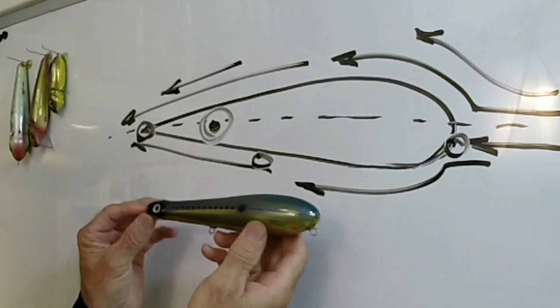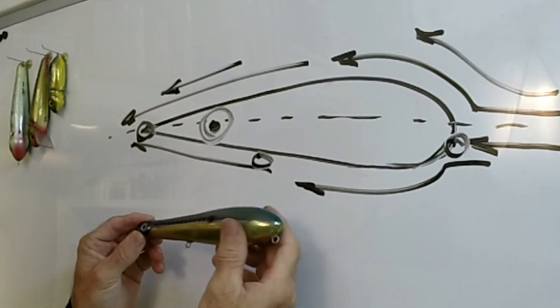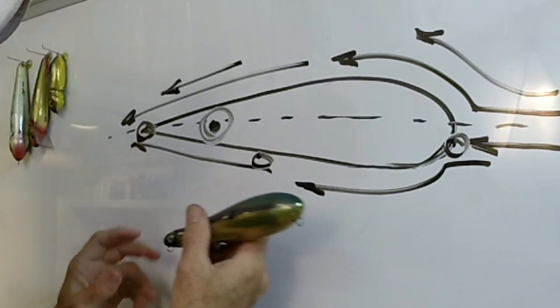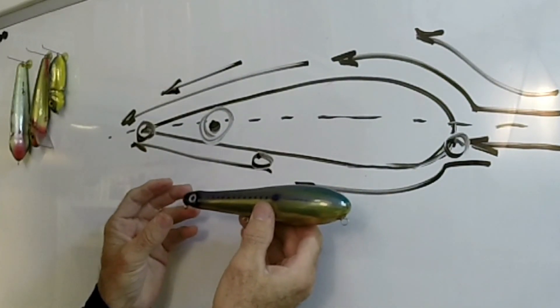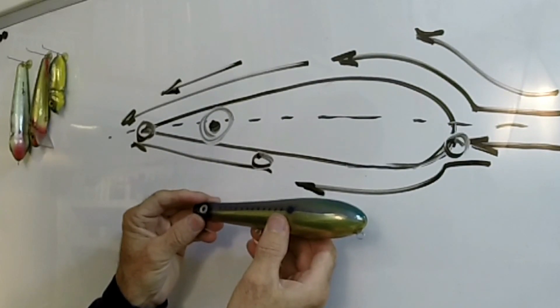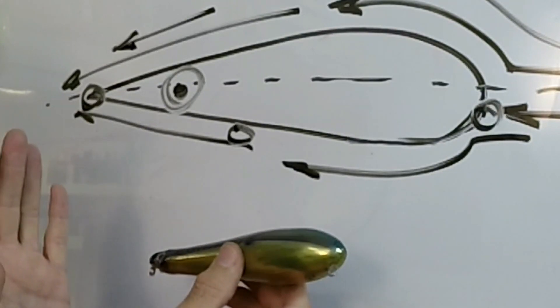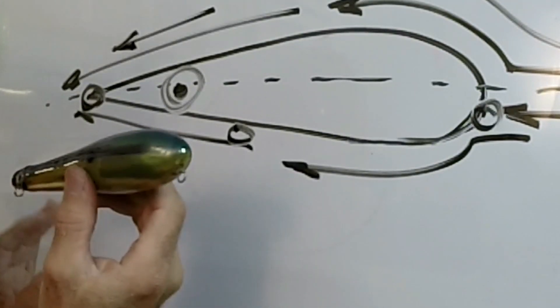This, obviously, whoever designed this designed it to minimize aerodynamic drag. To most of us, it's an oddball shape because the head is so small, but this lure is gonna fly farther. Everything else being held the same, it's gonna go farther than any other lure.